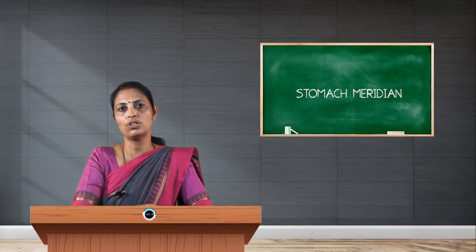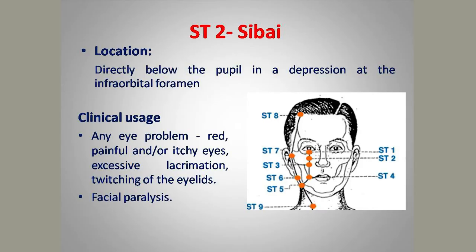Stomach 2, Sibai, is located 0.7 cun below the first point, at the midpoint of the infra-orbital ridge. Its use is similar to Stomach 1 — important for eye problems such as pain in the eye, lacrimation, and twitching of eyelids. The needling technique is similar to Stomach 1.